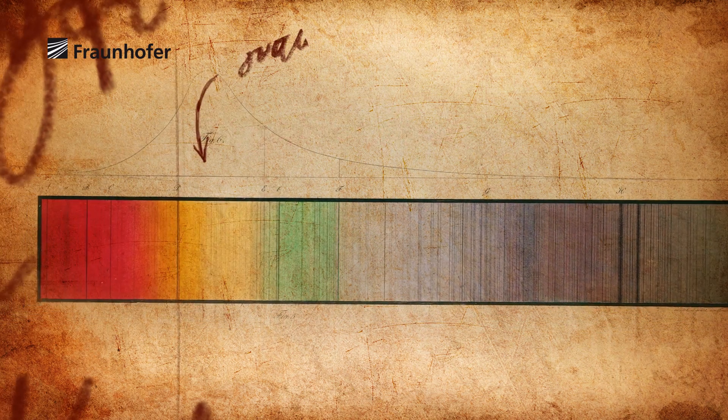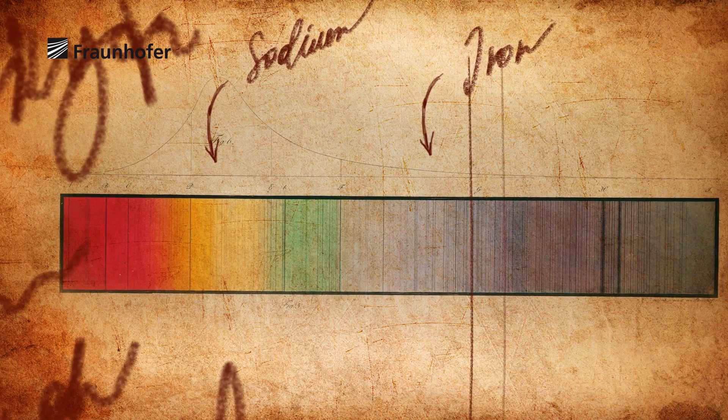For example, sodium is missing parts of orange light, and for iron, parts of blue and green.